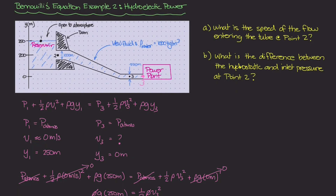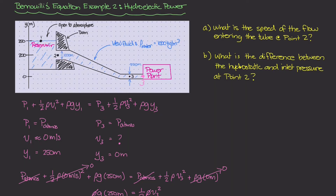Welcome back. This is part two of our hydroelectric power involving Bernoulli's equation. In the last question, we figured out the answer to part A, which was the flow velocity at the intake of this pipe. Now we're going to look at part B.